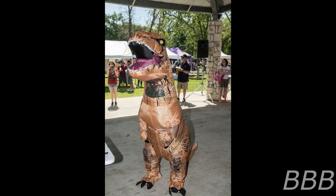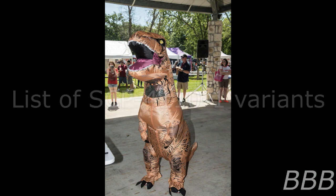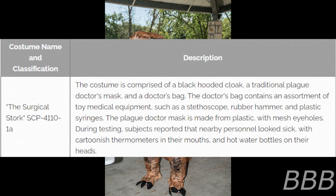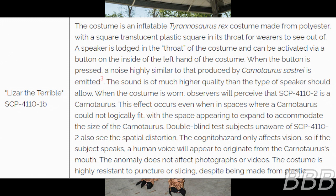The Surgical Stork — SCP-4110-1-A: The costume is comprised of a black hooded cloak, a traditional plague doctor's mask, and a doctor's bag. The bag contains an assortment of toy medical equipment such as a stethoscope, rubber hammer, and plastic syringes. The plague doctor mask is made from plastic with mesh eye holes. During testing, subjects reported that nearby personnel looked sick, with cartoonish thermometers in their mouths and hot water bottles on their heads.